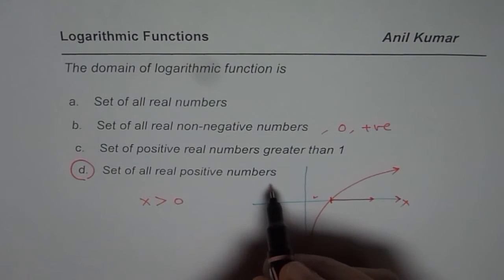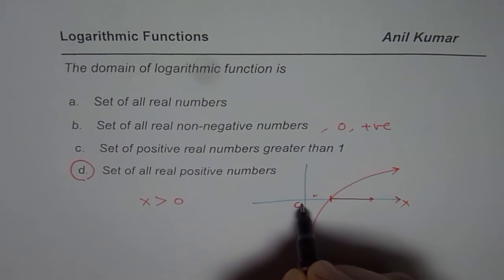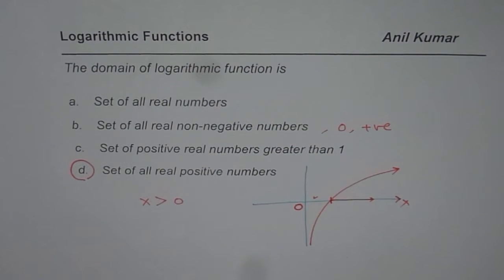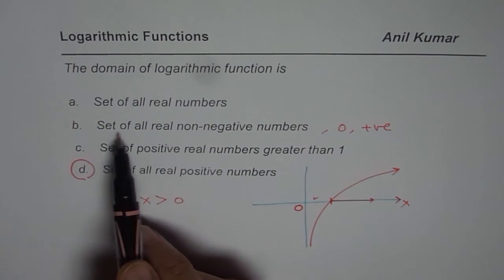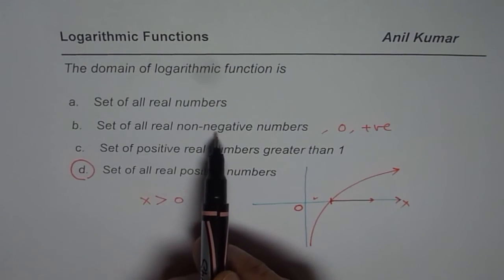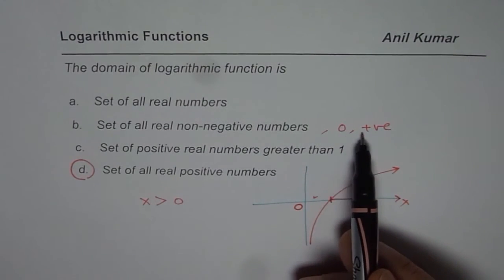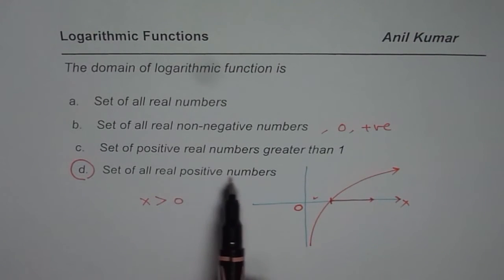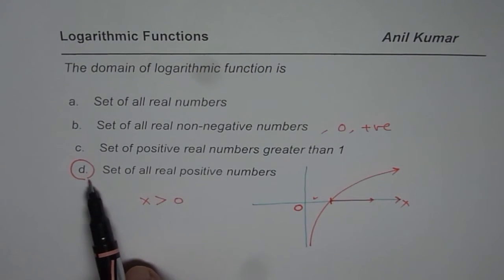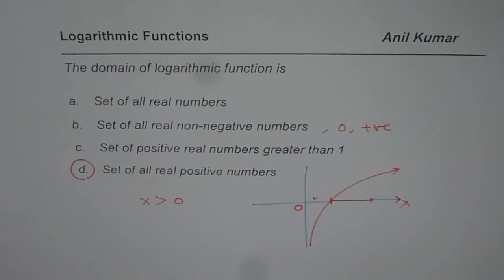Now here there is also an ambiguity, since most of the time zero is considered to be positive. But since we have choice B — set of all real non-negative — which includes zero and positive numbers, that means set of all real positive numbers will not include zero. So that is the best choice amongst the choices given to us. The question is tricky, but amongst the choices given, that becomes the solution. I hope you understand and appreciate it. Thank you.